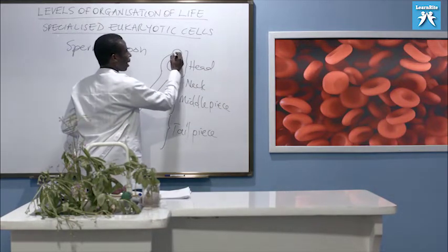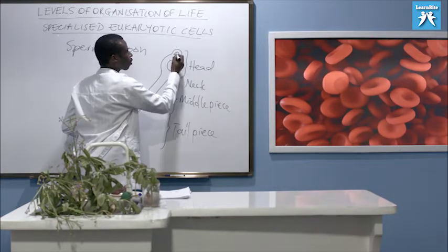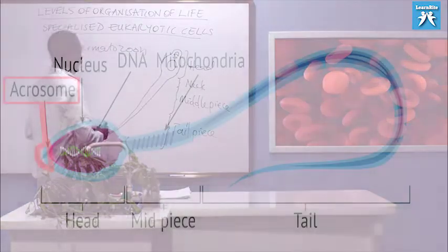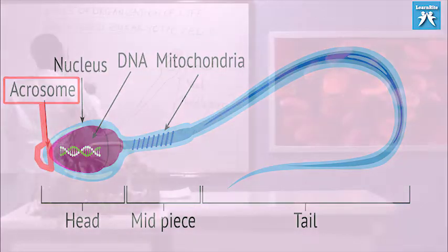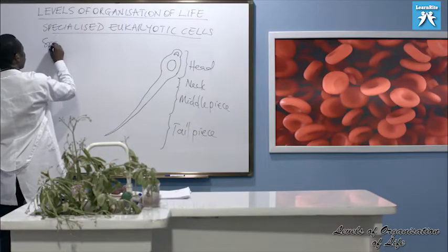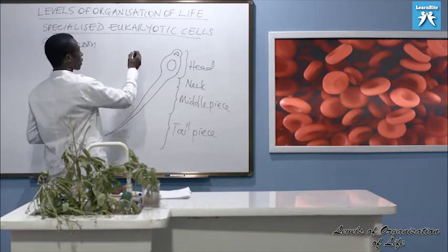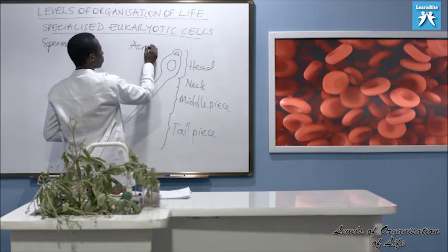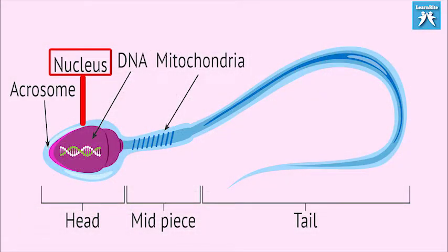At the anterior end of the head, we have what we call the acrosome. So this is the acrosome. We are treating the spermatozoon or sperm cell. This is the nucleus, and this is your cytoplasm.